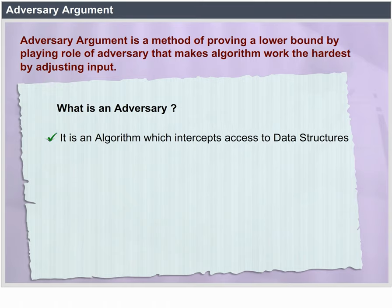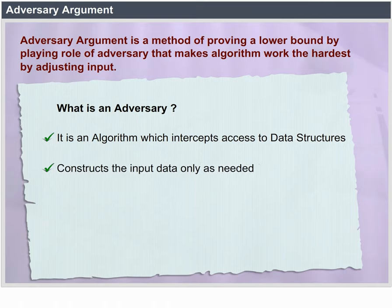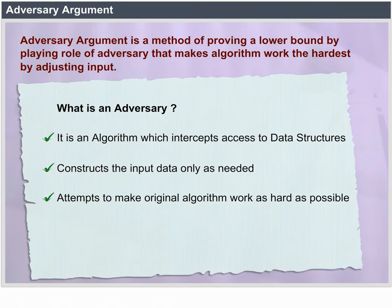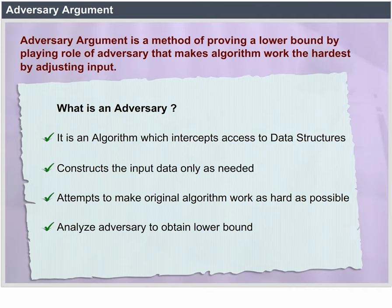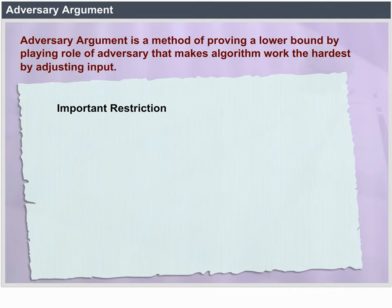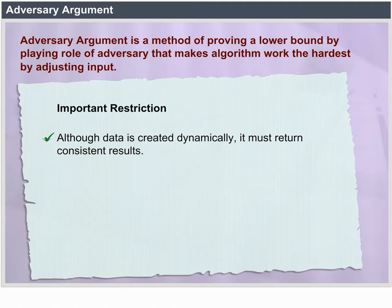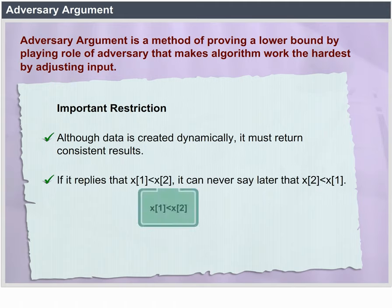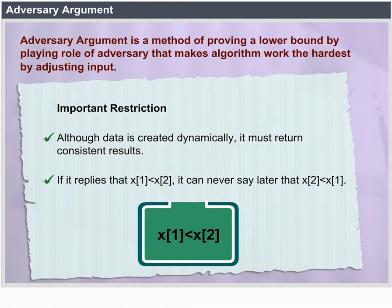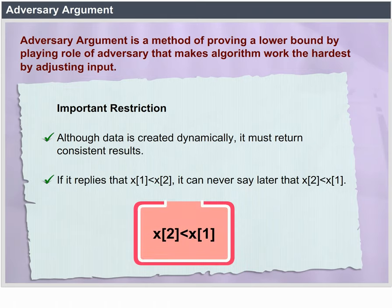An adversary is an algorithm which intercepts access to data structures, constructs the input data only as needed, and attempts to make the original algorithm work as hard as possible. We analyze the adversary to obtain a lower bound. An important restriction: although data is created dynamically, it must return consistent results. If it replies that x1 is less than x2, it can never later say that x2 is less than x1.